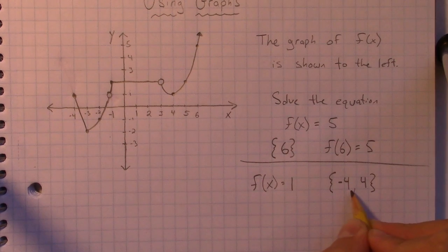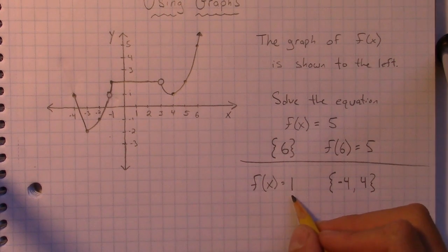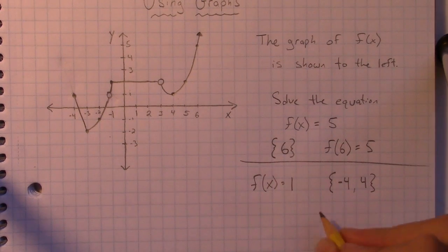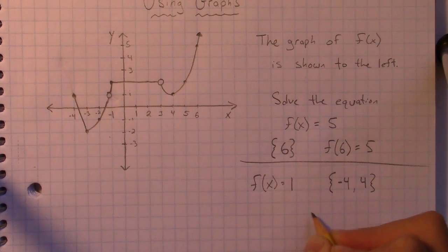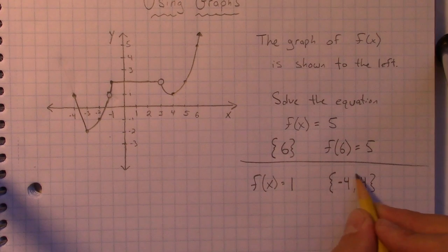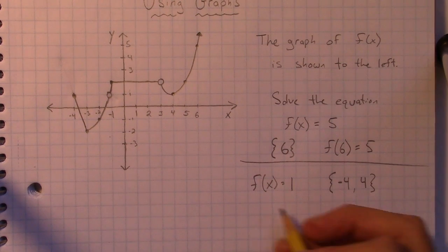So both of those numbers work. So in other words, f(-4) equals 1 and f(4) equals 1. So you can kind of see why this set notation is going to be more helpful. It's actually less writing than writing f(4) or f(-4) equals 1. So this is going to be your answer here. Some people like it boxed in or circled, but I guess you should check with your teacher what they would like there.